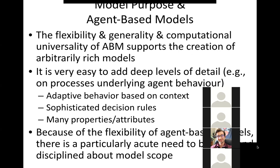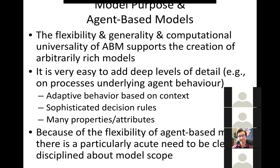With stock and flow models, you have a limited grammar and limited number of building blocks — you're constrained by the nature of it to what you can describe effectively. With agent-based models, we have this amazing ability to put together arbitrarily rich structures. This is an asset, but it's also a liability and a risk. It's very easy to add deep levels of detail, and you can find yourself spending massive amounts of time in ways that shortchange your project.